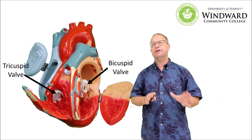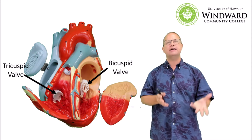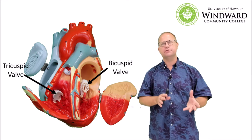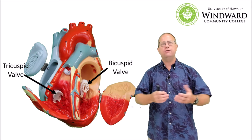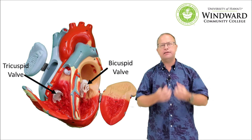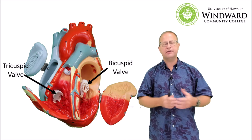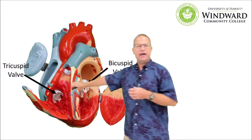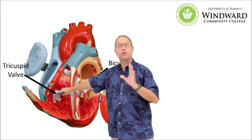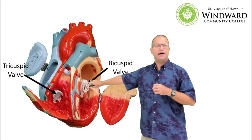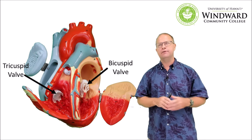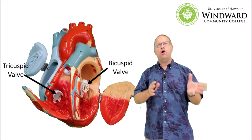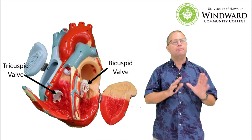Separating the atria from the ventricles we have the tricuspid and bicuspid valves — these are atrioventricular valves. They separate the atria from the ventricles and prevent backflow of blood when the ventricles are contracting and pushing blood up to the pulmonary trunk and the aorta. On the right hand side we have the tricuspid — remember, tri and right both have an R. On the left hand side we have the bicuspid or mitral valve, where mitral refers to its shape resembling the Pope's mitre.